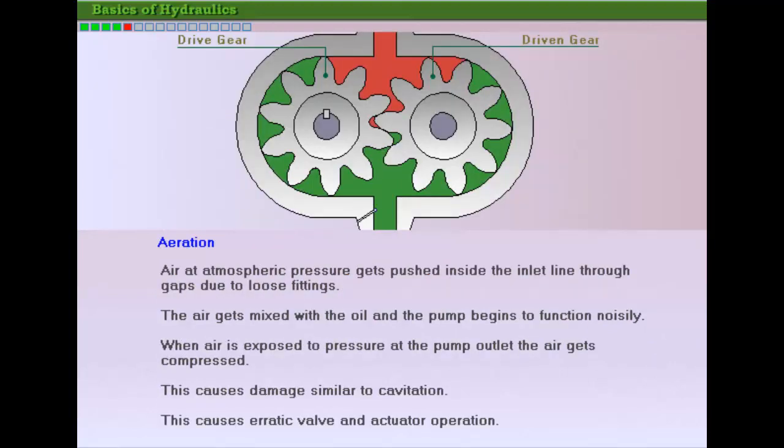A leak in the pump inlet line can also cause problems in the working of the pump. The problem occurring in this case is called aeration. Air at atmospheric pressure gets pushed inside the inlet line. This air-oil mixture causes a lot of noise inside the pump and can cause a pump to lose its prime.